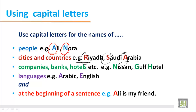For the names of companies, banks, and hotels: Nissan, where 'N' is capital; Gulf Hotel, where 'G' is capital and 'H' is capital. For languages: Arabic, where 'A' is capital; and English, where 'E' is capital.